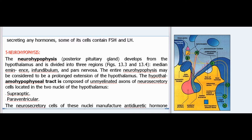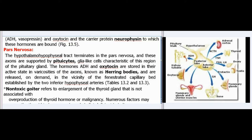The neurohypophysis (posterior pituitary gland) develops from the hypothalamus and is divided into three regions (Figs. 13.3 and 13.4): median eminence, infundibulum, and pars nervosa. The entire neurohypophysis may be considered a prolonged extension of the hypothalamus. The hypothalamohypophysial tract is composed of unmyelinated axons of neurosecretory cells located in two nuclei of the hypothalamus — supraoptic and paraventricular. The neurosecretory cells of these nuclei manufacture antidiuretic hormone (ADH/vasopressin) and oxytocin, and the carrier protein neurophysin to which these hormones are bound (Fig. 13.5).